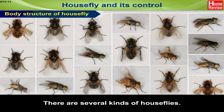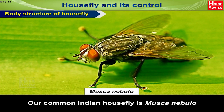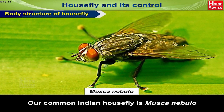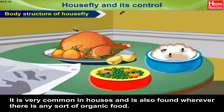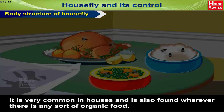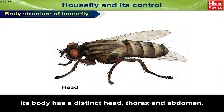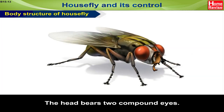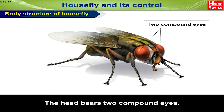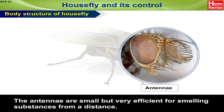House fly and its control. Body structure of house fly. There are several kinds of house fly. Our common Indian house fly is Musca nebulo. It is very common in houses and is also found wherever there is any sort of organic food. Its body has a distinct head, thorax and abdomen. The head bears two compound eyes.